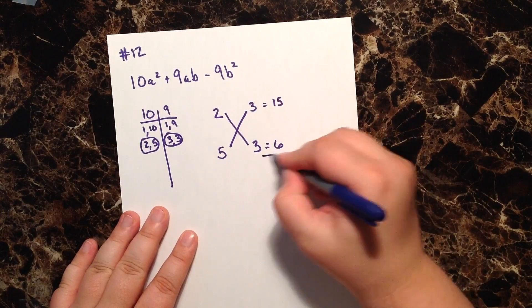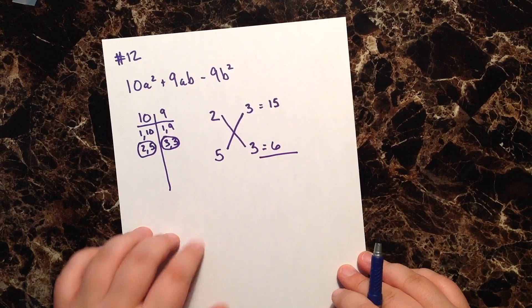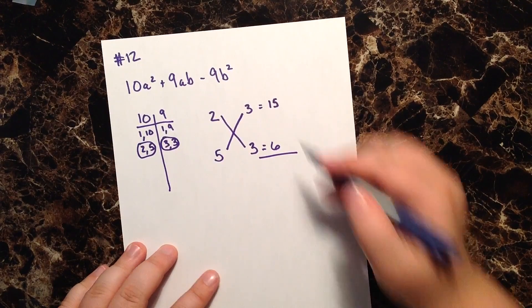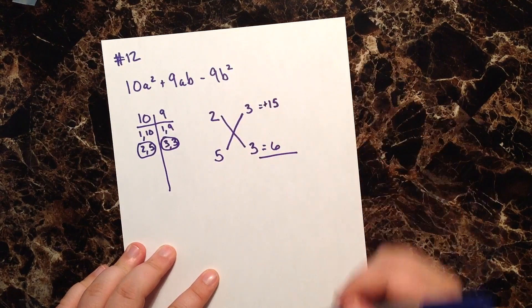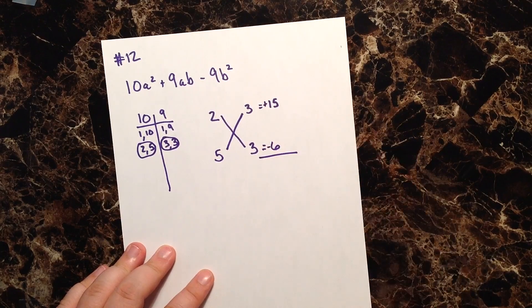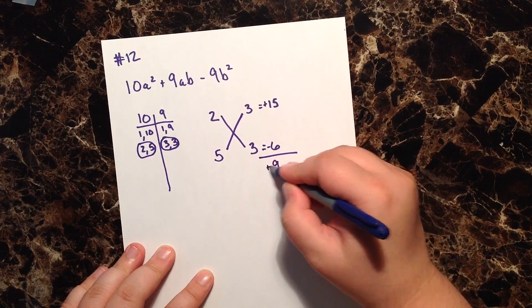And the answer is yes, of course. So what do the signs of 15 and 6 have to be in order to get a positive 9 when we use subtraction? Well, the 15 has to be positive, and my 6 has to be negative, and positive 15 minus 6 gives me a positive 9.